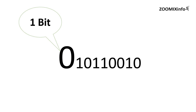1 byte is 1 KB. In this case, you can add 1 digit, or 1 bit. You can add 1 byte to 8 bits. 1 KB is 1 KB. 1 KB is 1 MB. 1 GB is 1 KB. That's the case.